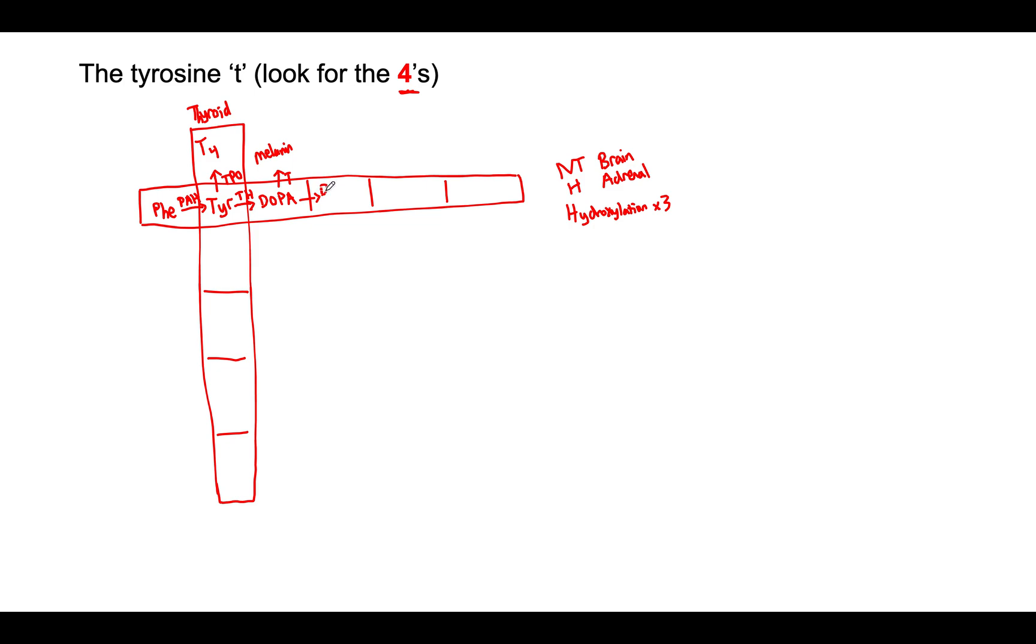DOPA can also be converted into what other substrate? That's right, dopamine. So how do we get from DOPA to dopamine? So one way to remember this is, these are both Ds, so whatever's in here must be a D as well. And that in fact is the case, we have DOPA decarboxylase.